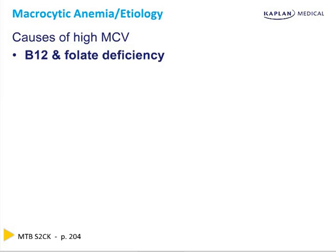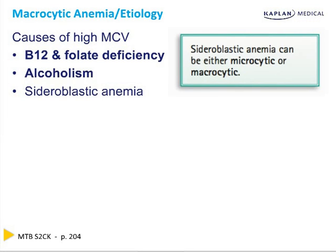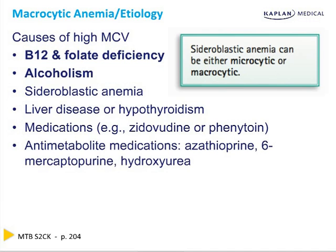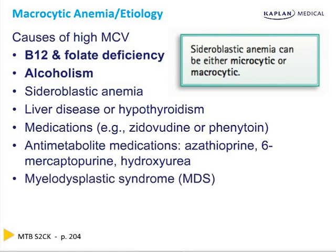High MCV anemias — large cells, macrocytosis. B12 and folate are both macrocytic and megaloblastic. Alcohol raises the cell size. Sideroblastic anemia can also raise the cell size. Liver disease or hypothyroidism can also raise cell size. Remember, sideroblastic with the extra iron built up in the mitochondria can be micro or macrocytic. Medications like zidovudine (the HIV medication), phenytoin — which causes folate loss in the urine — anti-metabolites like azathioprine and its metabolite 6-mercaptopurine, and hydroxyurea can also cause it. Myelodysplastic syndrome — these are all the causes of macrocytosis.